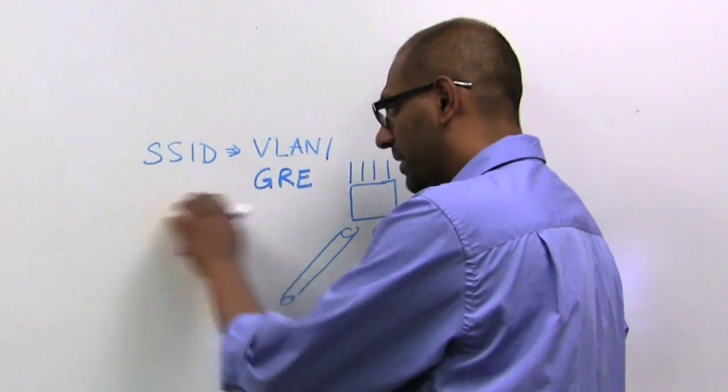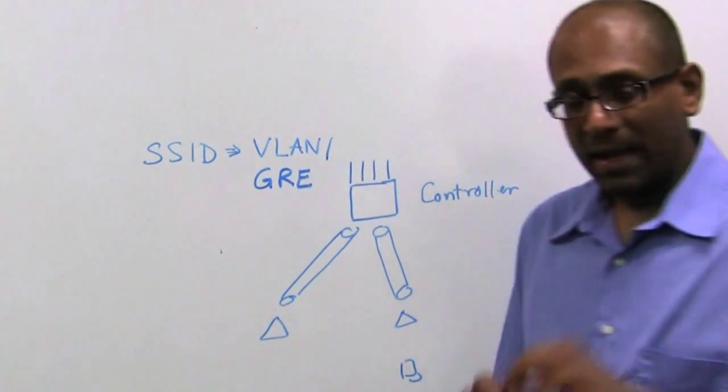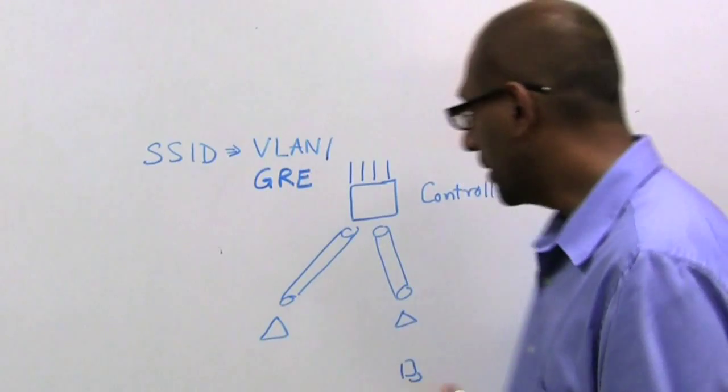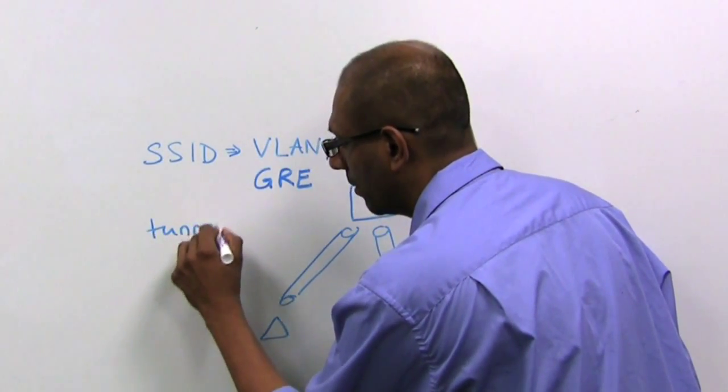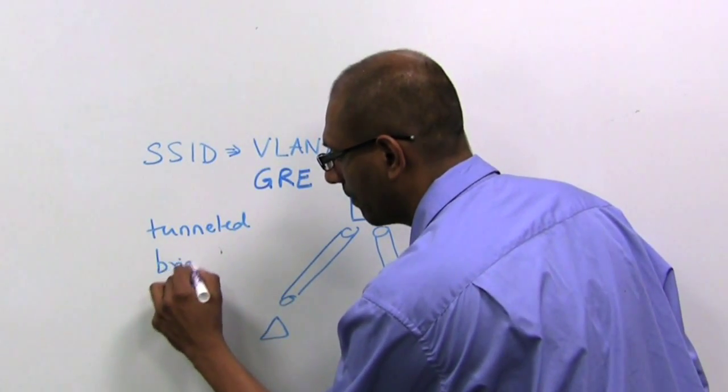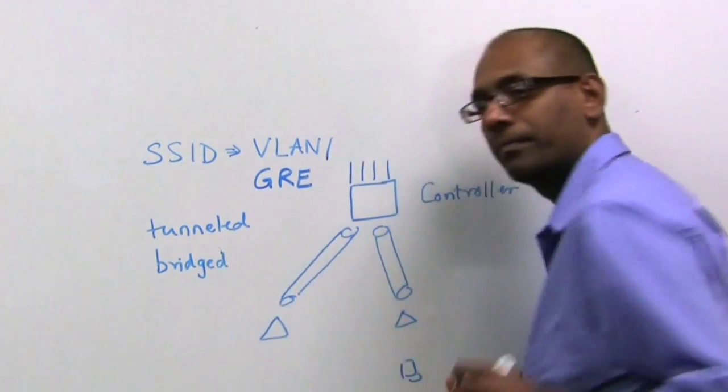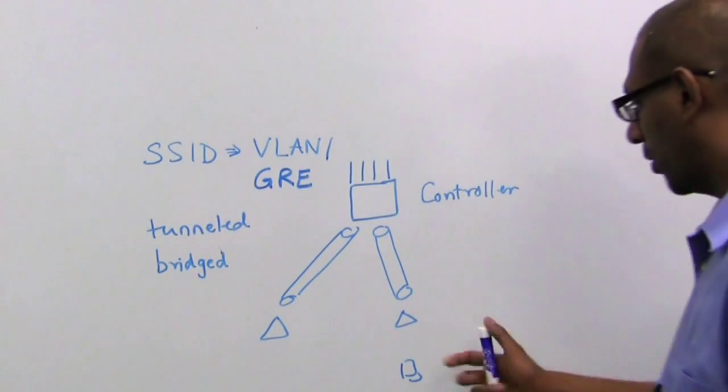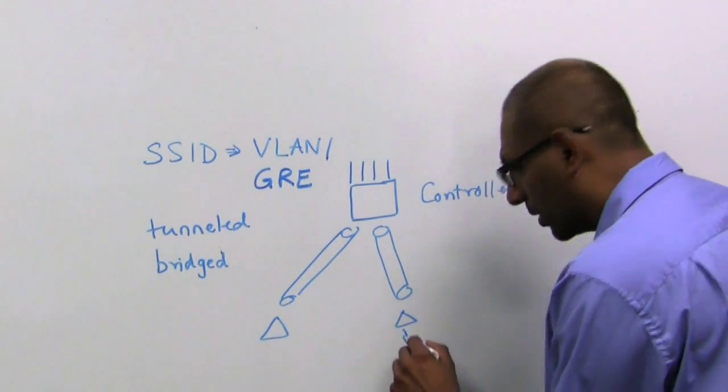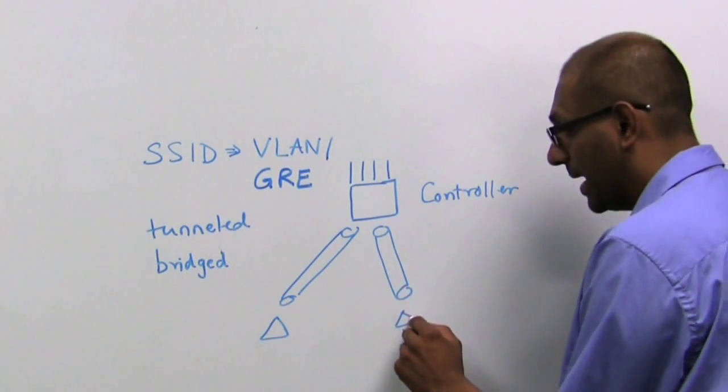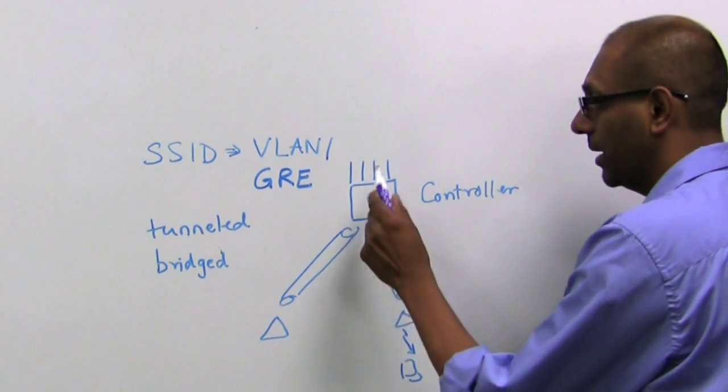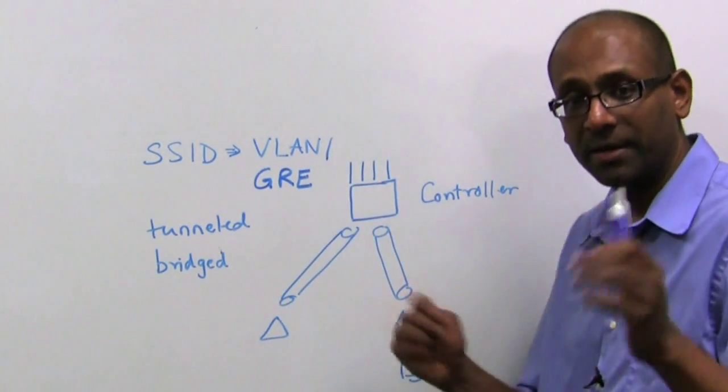Now, while this is the default mapping, an SSID might either be what we call in tunnel mode or in bridge mode. In a tunnel mode, all the packets that are going over the wireless network will go through the tunnel from the AP into the controller. In the controller, they'll get mapped to the VLAN or GRE. That's standard.